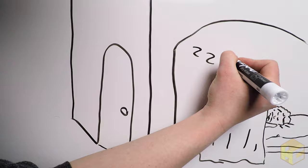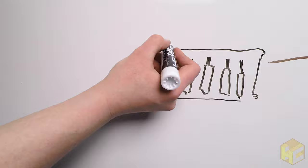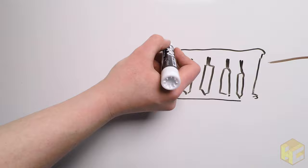Night fell. Pliny the Elder got some sleep, but was woken during the night. Pumice had piled up so much outside of his door that they had to leave or risk being trapped inside. The earthquakes were getting more violent, and fearful that the buildings would fall on them, Pliny and the Stabians left the cover of the buildings behind.